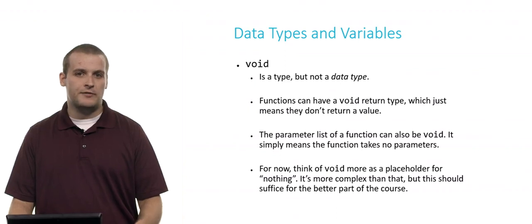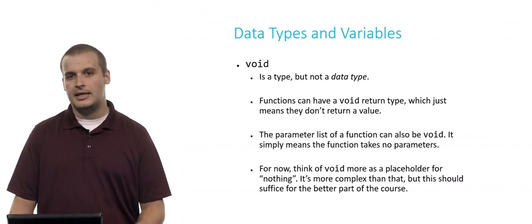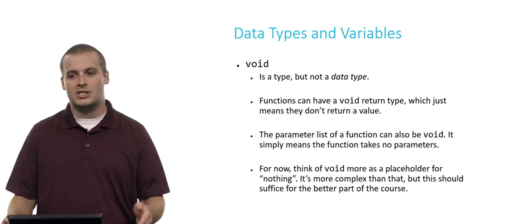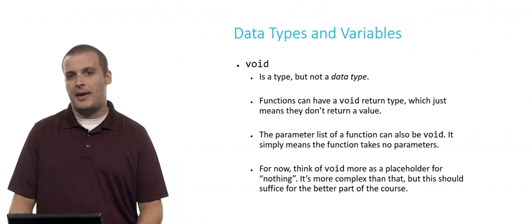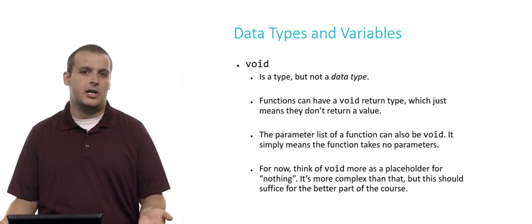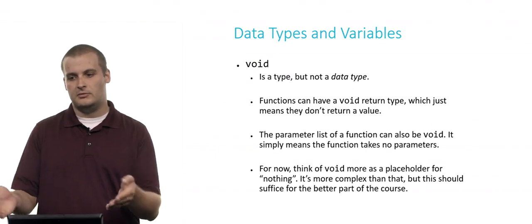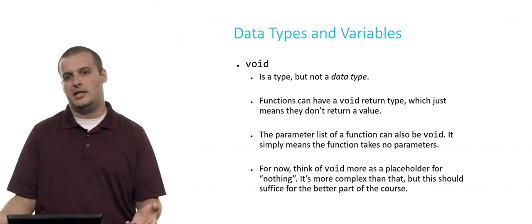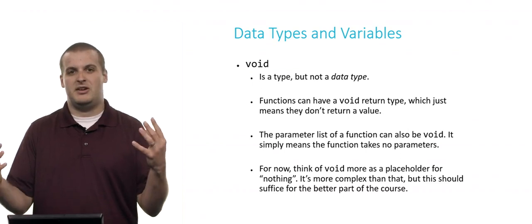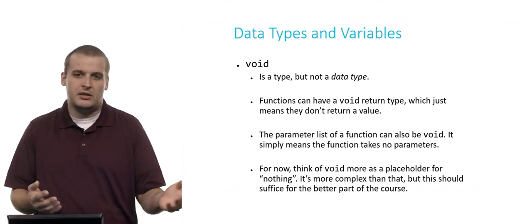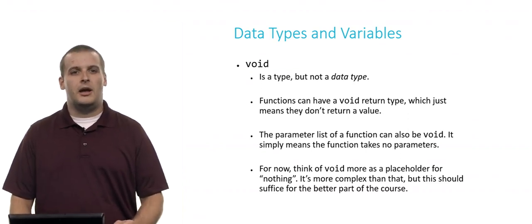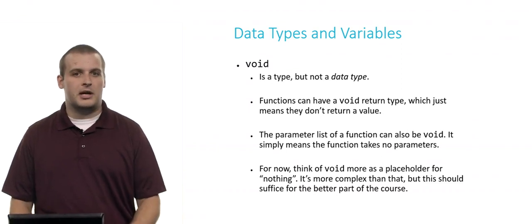The parameter list of a function can also be void, and you've also seen that quite a bit in CS50 too. Int main void, does that ring a bell? Basically, what that means is that main doesn't take any parameters. There's no arguments that get passed into main. Now, later on, we'll see that there is a way to pass arguments into main. But so far, what we've seen is int main void. Main just doesn't take any arguments. And so we specify that by saying void. We're just being very explicit about the fact that it doesn't take any arguments. So for now, suffice it to say that void basically should just serve as a placeholder for you as thinking about it as nothing. It's not really doing anything. There's no return value here. There's no parameters here. It's void. It's a little more complex than that, but this should suffice for the better part of the course. And hopefully now you have a little bit more of a concept of what void is.